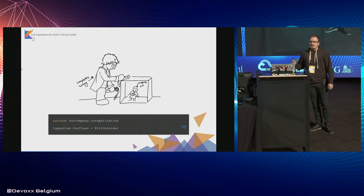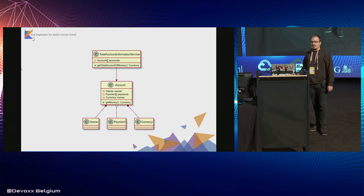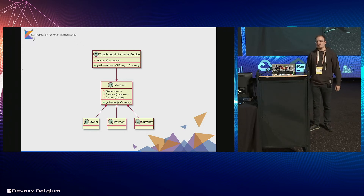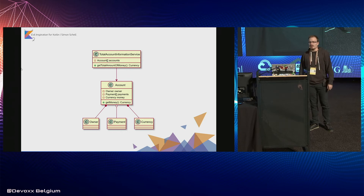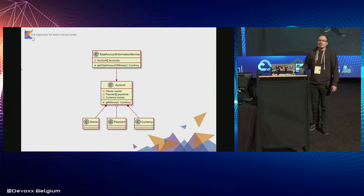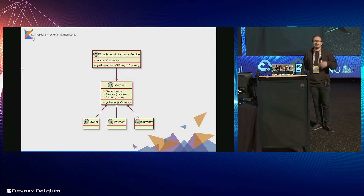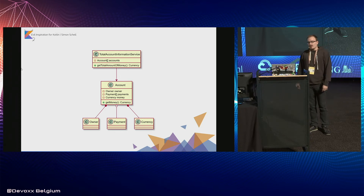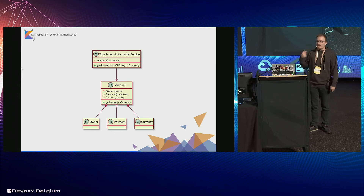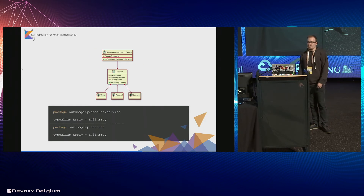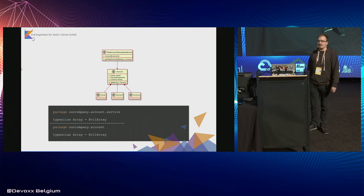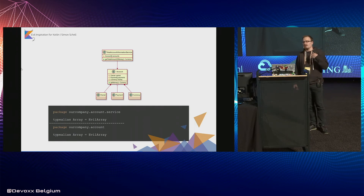This allows us to do the following. First, we have a total account information service and a class called 'account' used by it, which both contain private customer information hidden inside fields not accessible to the public. We will then inject our own type aliases to interchange the arrays inside of both classes with our own evil array.